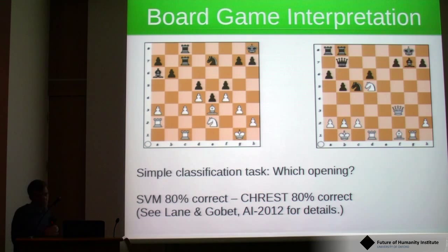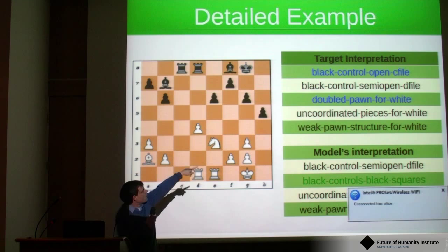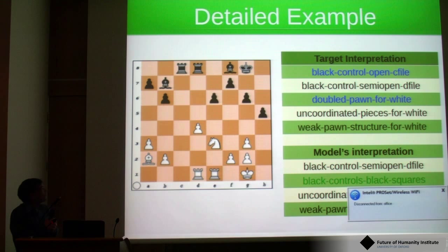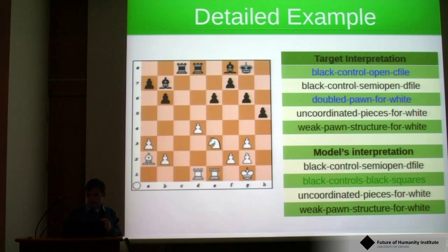We then wanted to move on to trying to interpret positions using a variety of different labels. Here's a position. On the top right, these five labels were given by a master-level chess player — things like 'black controls the open C file,' 'there's a doubled pawn for white,' or 'there's a weak pawn structure for white.' These are the labels that a human player gave to a database of about 500 positions.